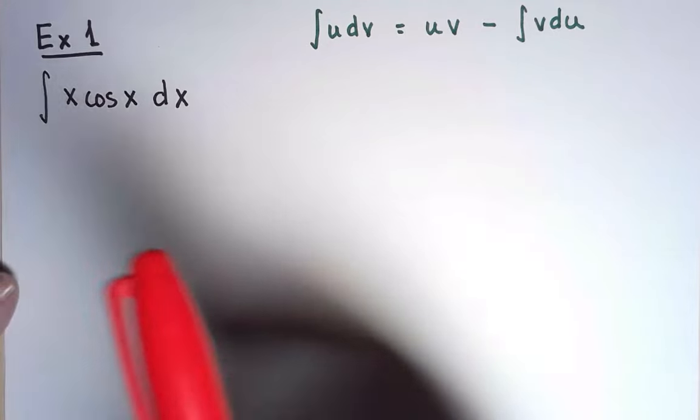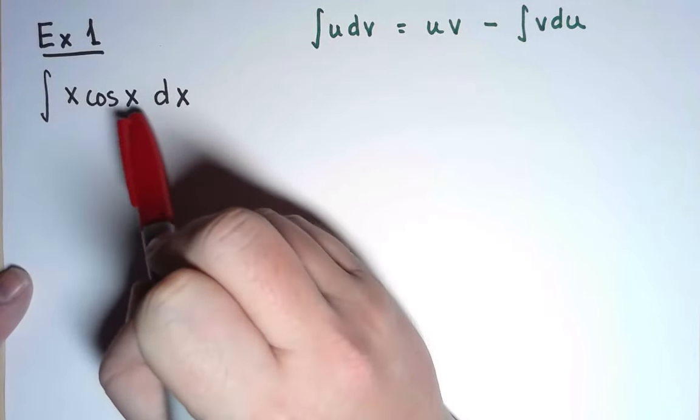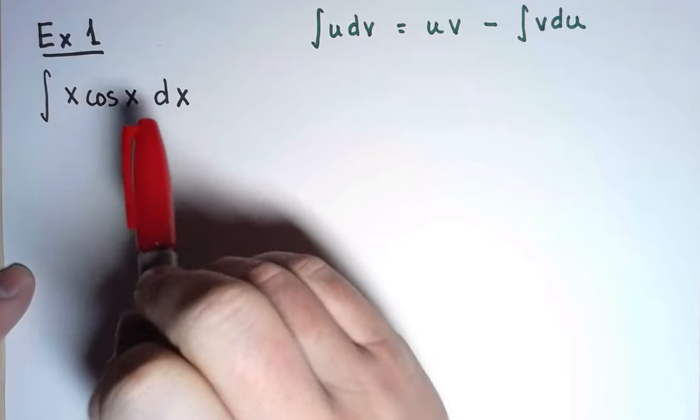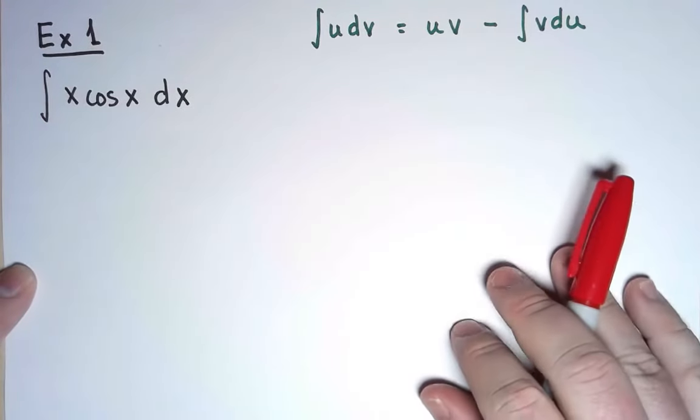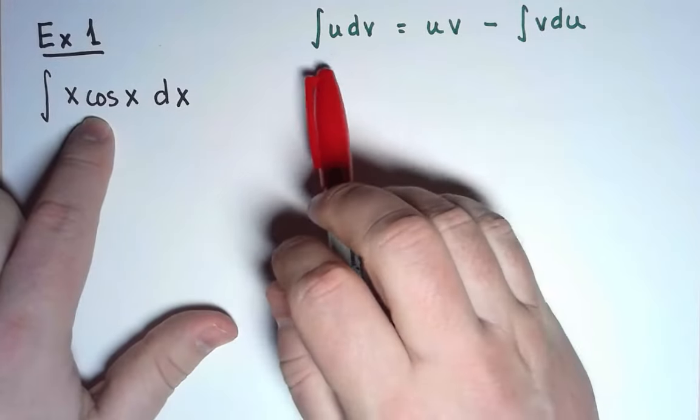For my first example, I want to integrate x times cosine x with respect to x. As a reminder, here is the formula for integration by parts. My function is a product, so that's a good way to start.